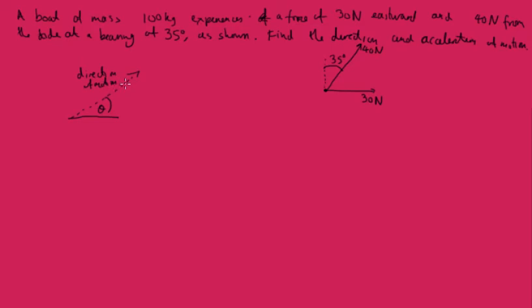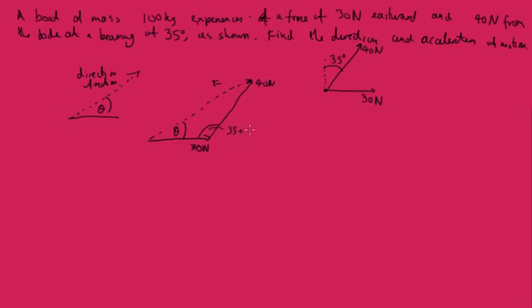We add the vectors together: we have our 30 newtons, then 40 newtons, and then our resultant vector F at some angle theta. What's the angle between them? The bearing is 35 degrees — that's measured from north. East is at 90 degrees, so 35 add 90 equals 125 degrees. That's the angle between our 30N and 40N vectors in the triangle.